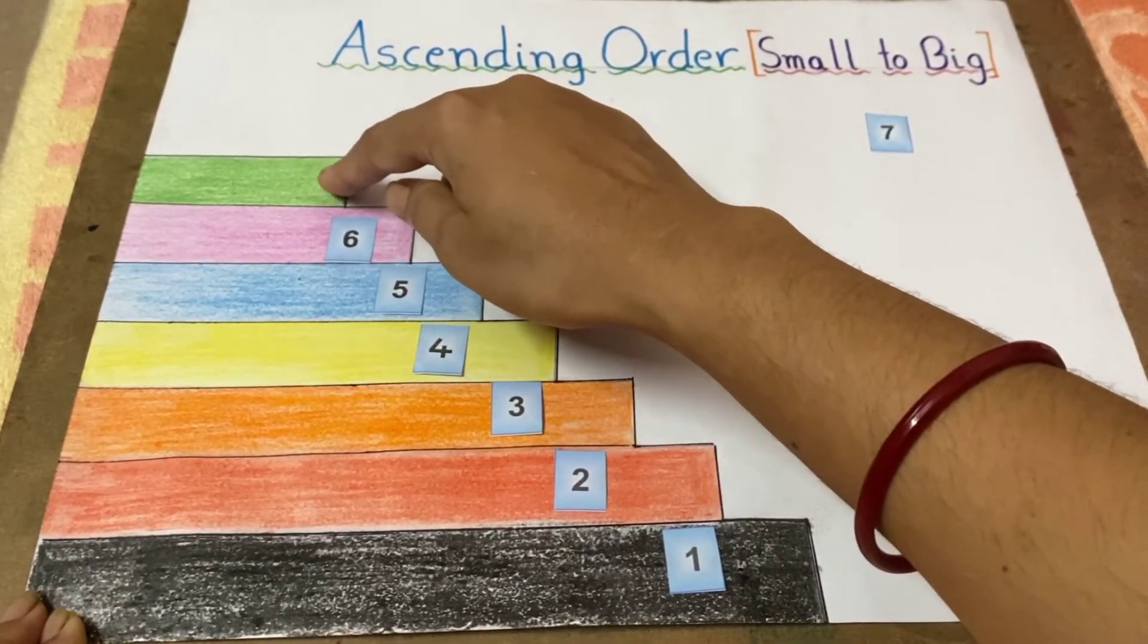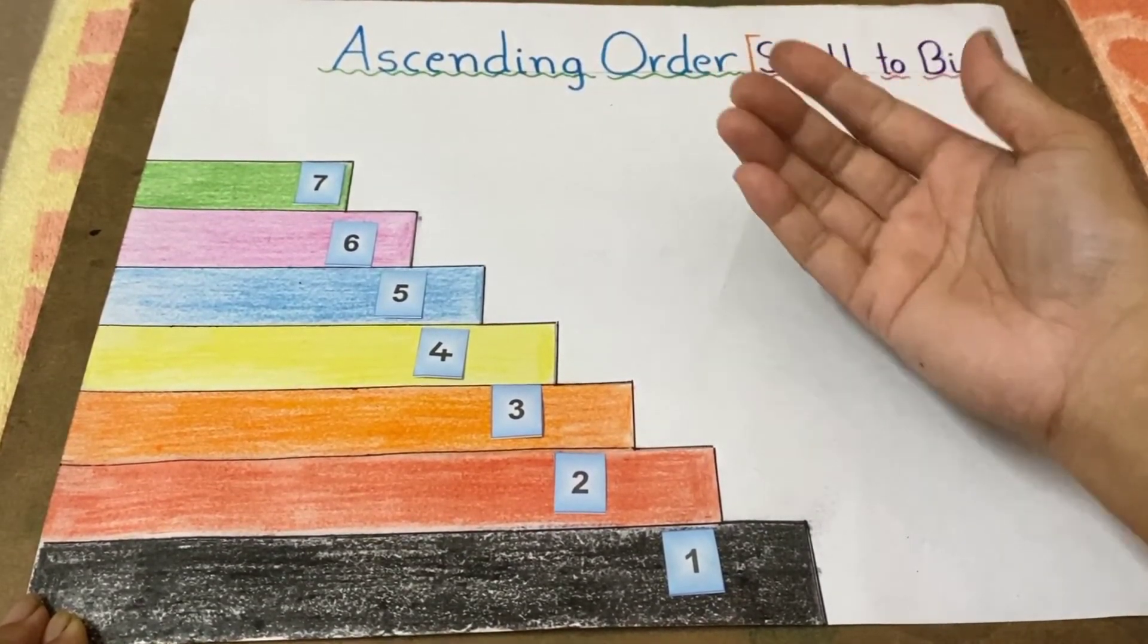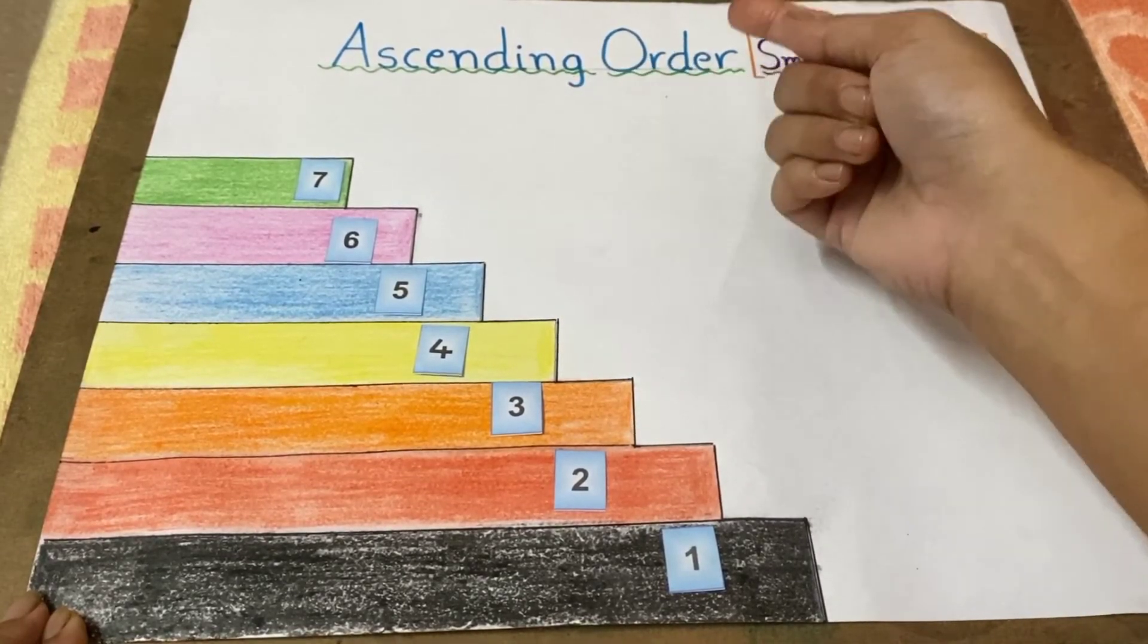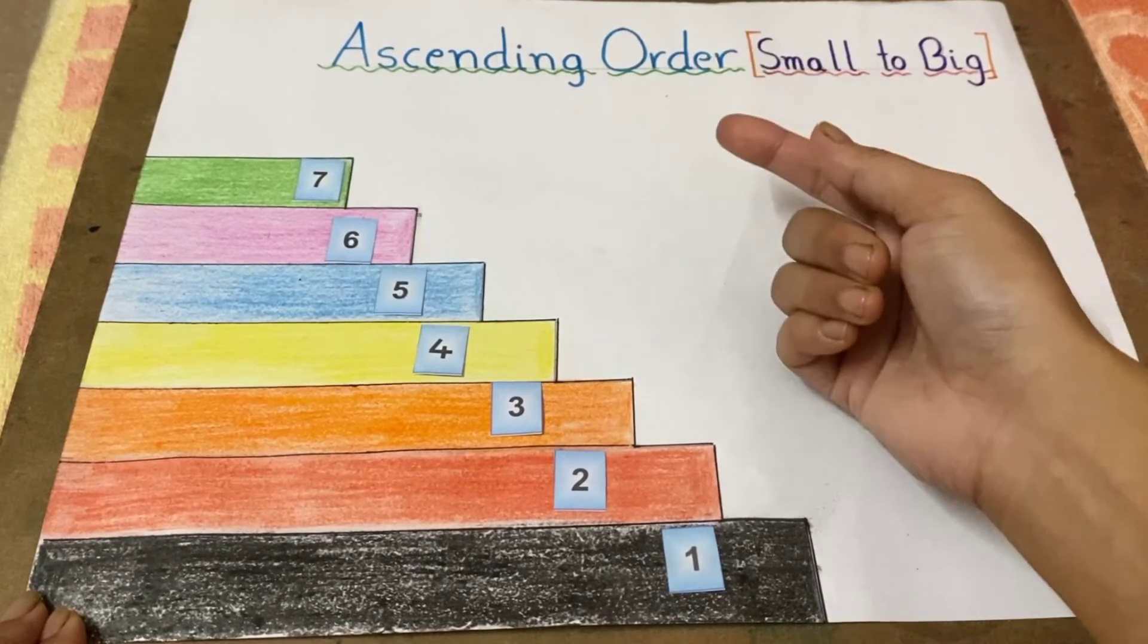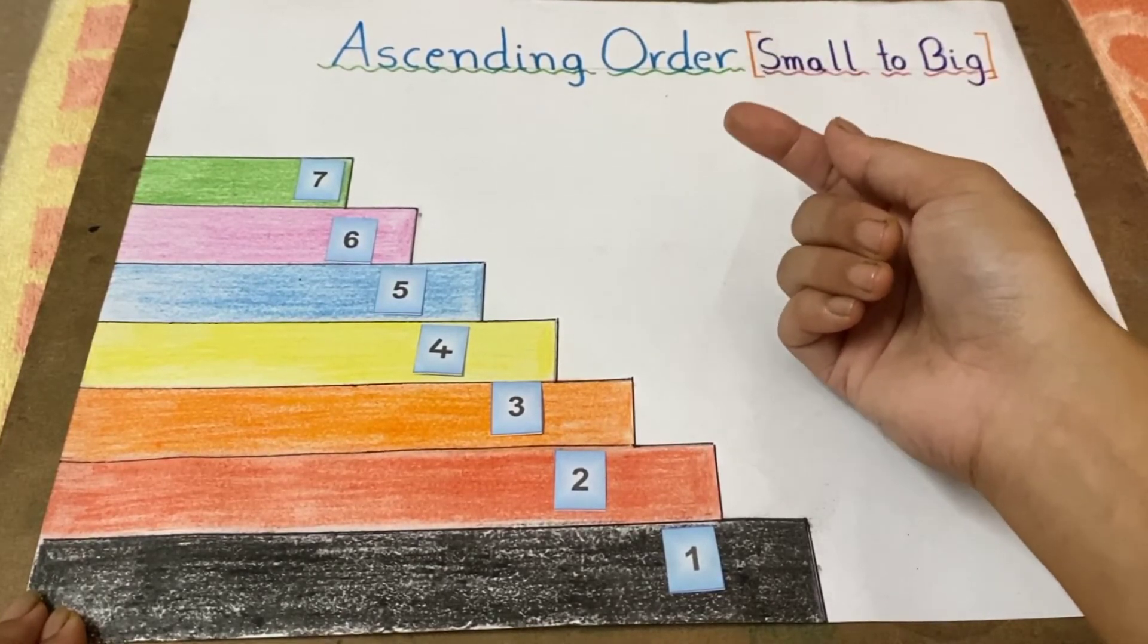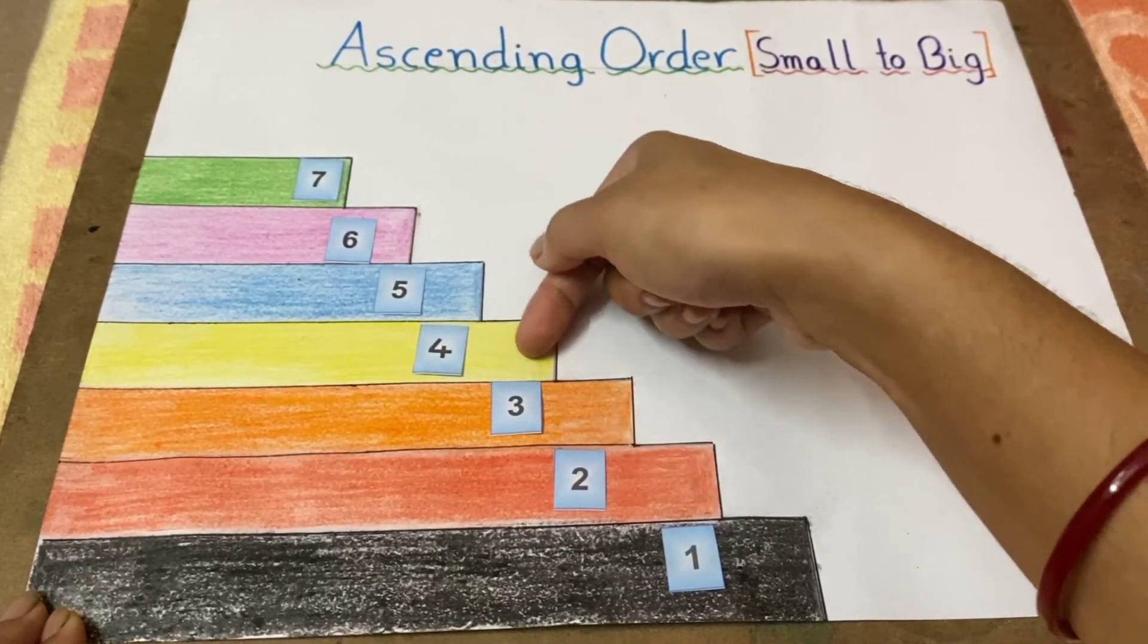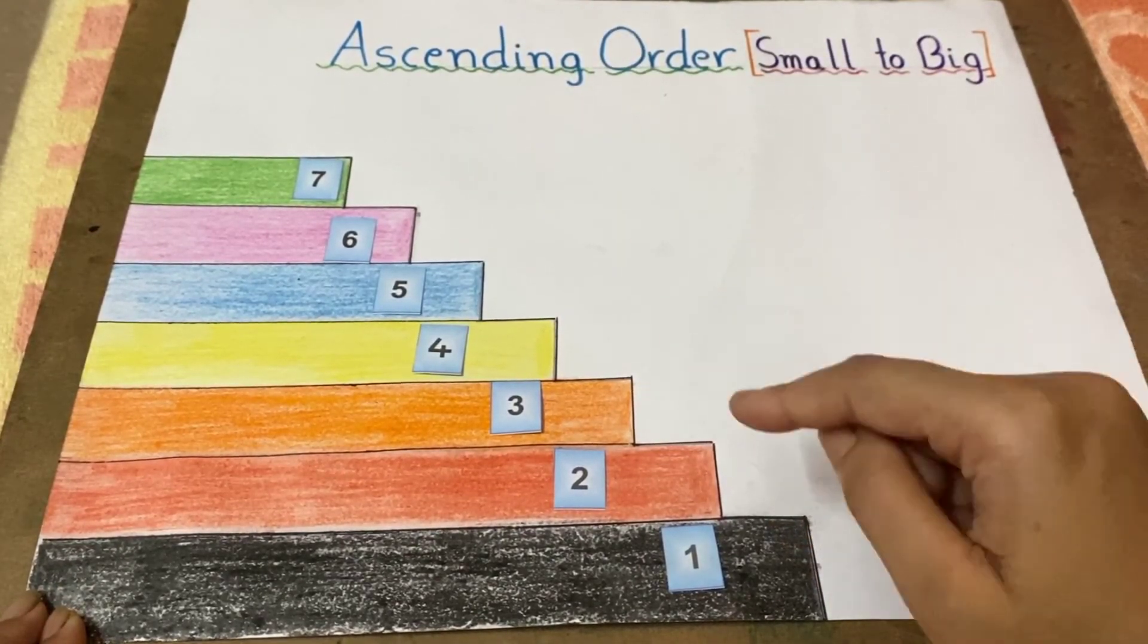So children, everyone is clear with the ascending order concept? Always keep in mind that ascending order means small to big, small number to big number. Keep practicing, my dear children. Bye bye.